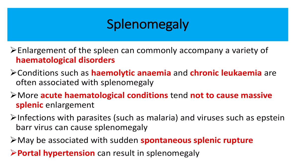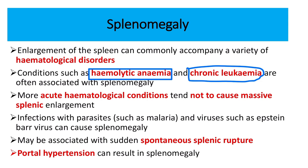Enlargement of the spleen commonly accompanies various hematological disorders such as hemolytic anemia and chronic leukemia — both chronic conditions. In acute hematological conditions, massive splenic enlargement does not typically occur. Massive splenomegaly usually develops in chronic conditions.